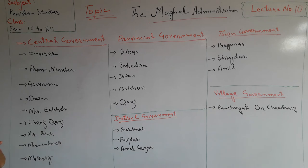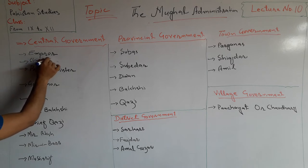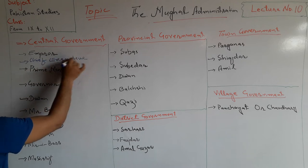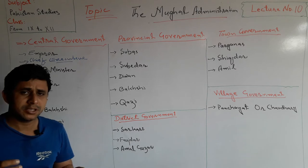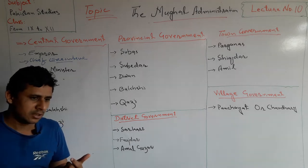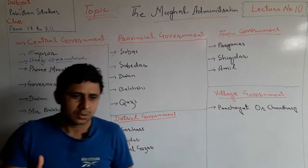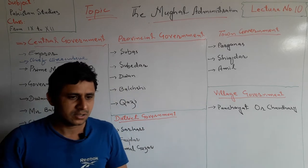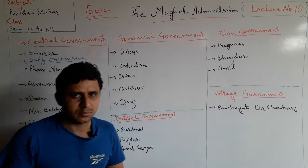First of all, the Emperor was the chief executive of the Mughal Empire and he made laws for others. But he took advice from Muftis and Ulama because there was an Islamic government — it was an Islamic state, the Mughal Empire.